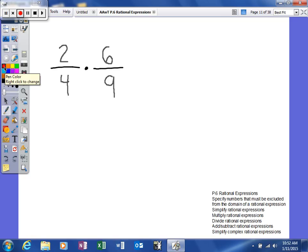You could easily multiply 2 times 6 and get 12, multiply 4 times 9 and get 36, and then simplify. But when we're dealing with rational expressions, we don't want to multiply first and then simplify. We actually want to simplify first and then multiply everything together.